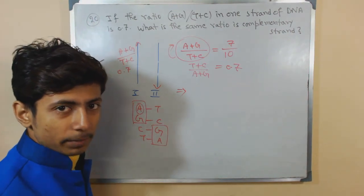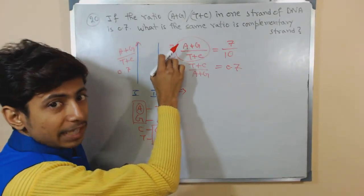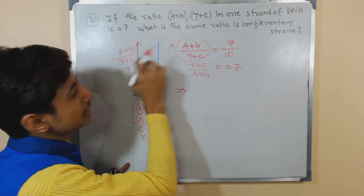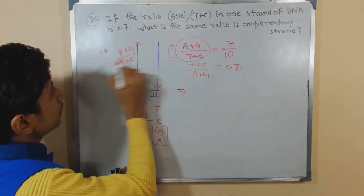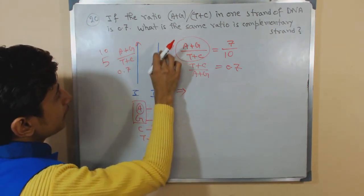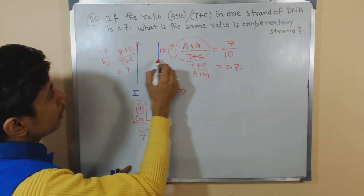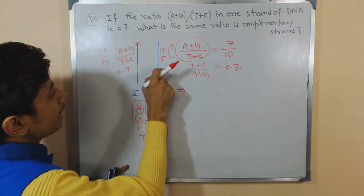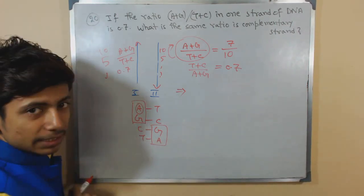If adenine is more in this strand, thymine will be more in the opposite strand. If guanine is more, cytosine will be more. For example, if you have 10 adenine, 10 thymine, 5 guanine, and 5 cytosine in strand 1, then the number of adenine will be much lesser in the opposite strand, and cytosine much lesser as well.